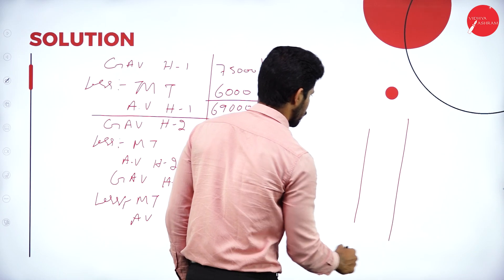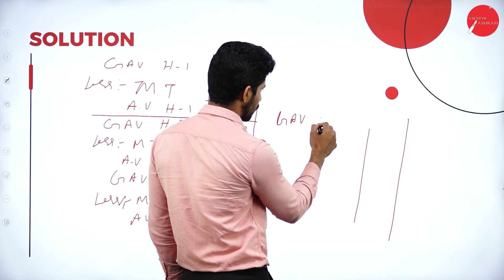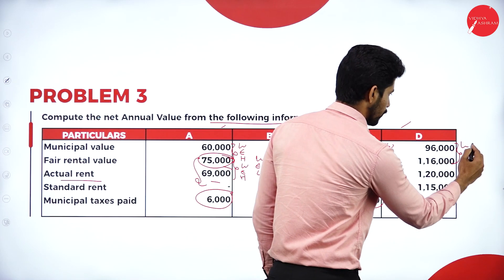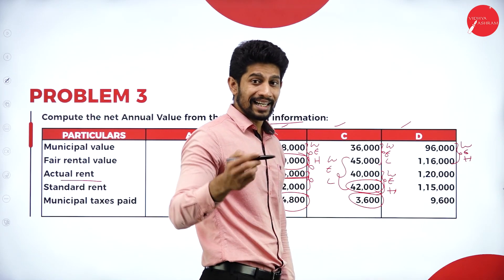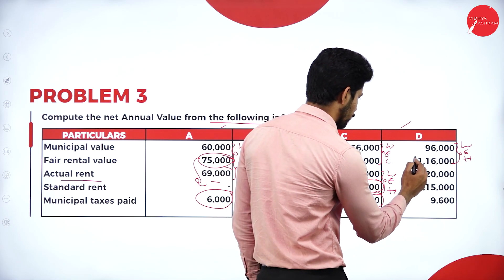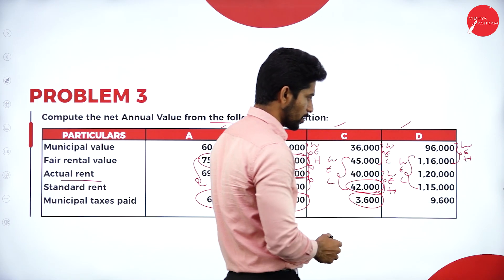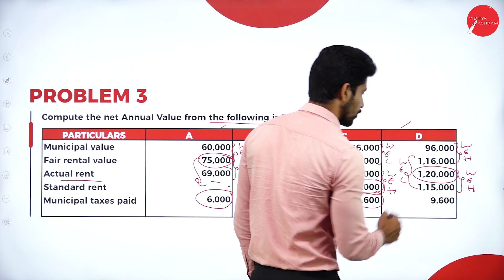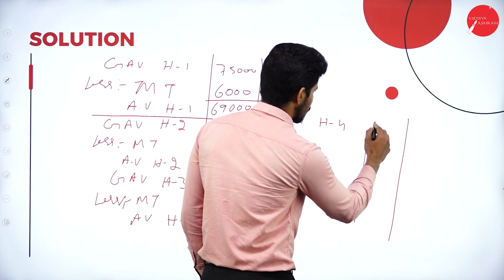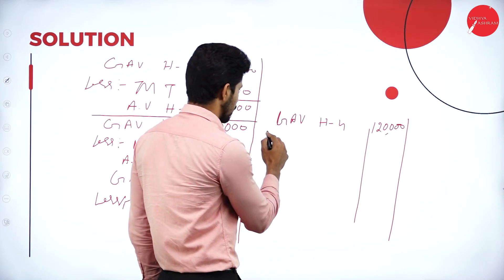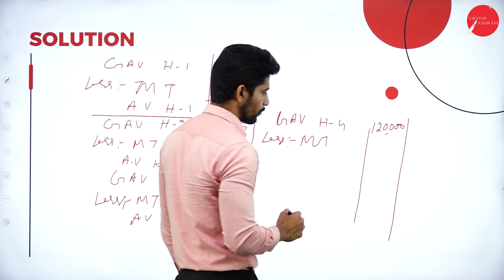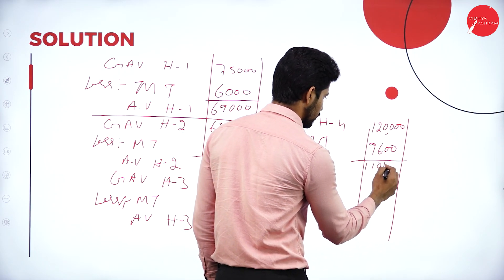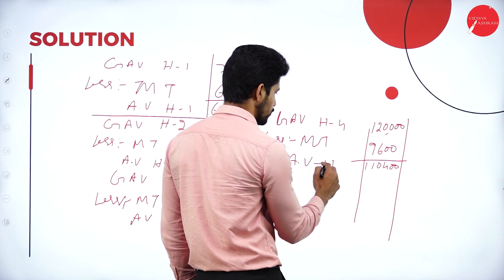For house four: municipal value and fair rent — whichever is high is 1,16,000. Compare with standard rent of 1,15,000 — whichever is low is 1,15,000. Compare with actual rent of 1,20,000 — whichever is high is 1,20,000. So gross annual value is 1,20,000. Less municipal tax of 9,600. Balance is 1,10,400, which is the annual value of house four.